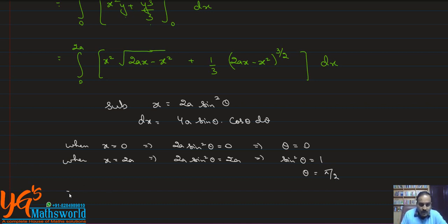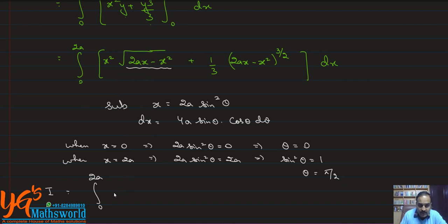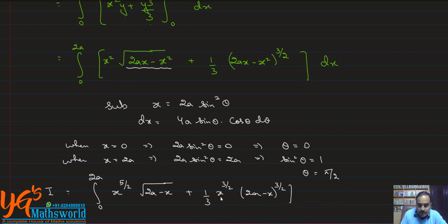Rearranging the integrand, we factor out x^(1/2) from the expression: x^(1/2) combines with x² to give x^(5/2) · √(2a − x), plus (1/3)x^(3/2) · (2a − x)^(3/2), all times dx.